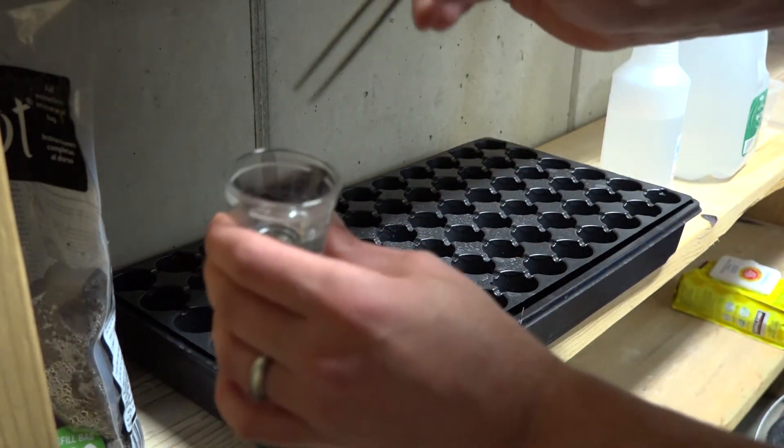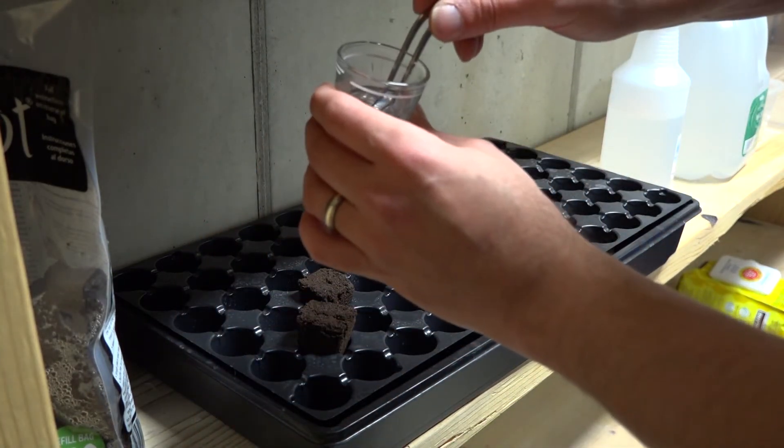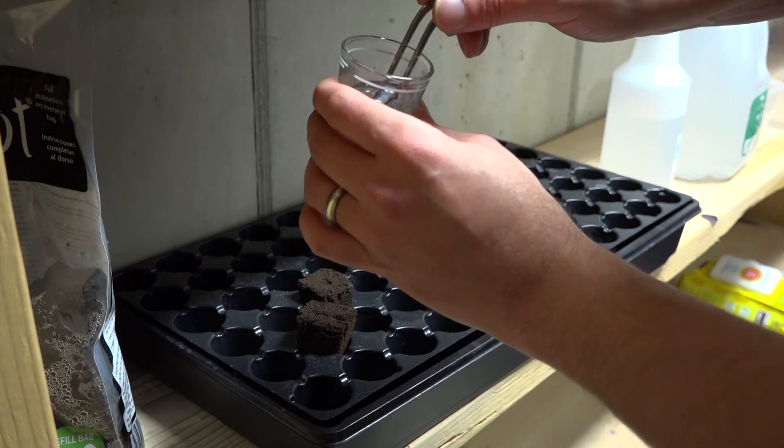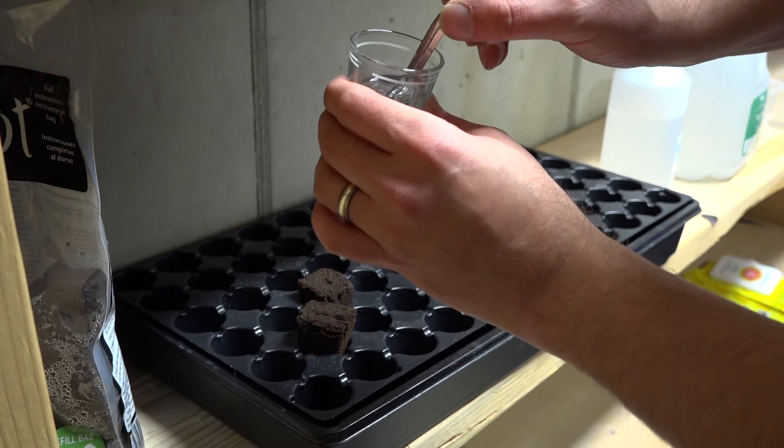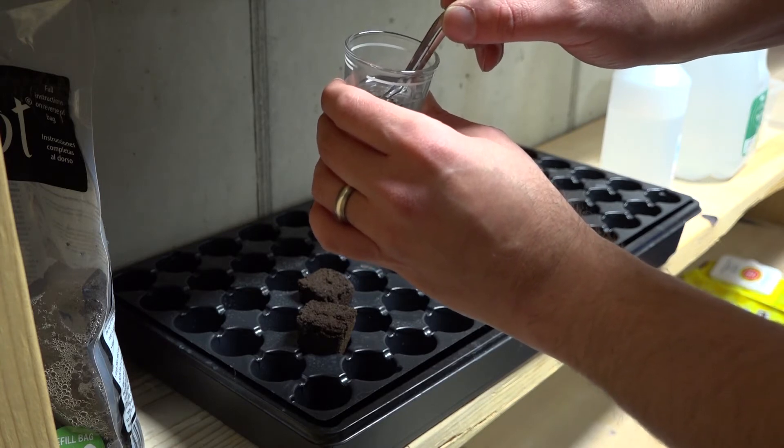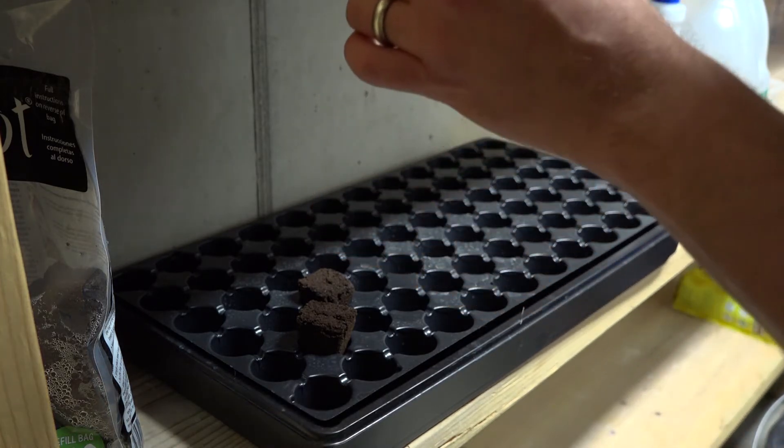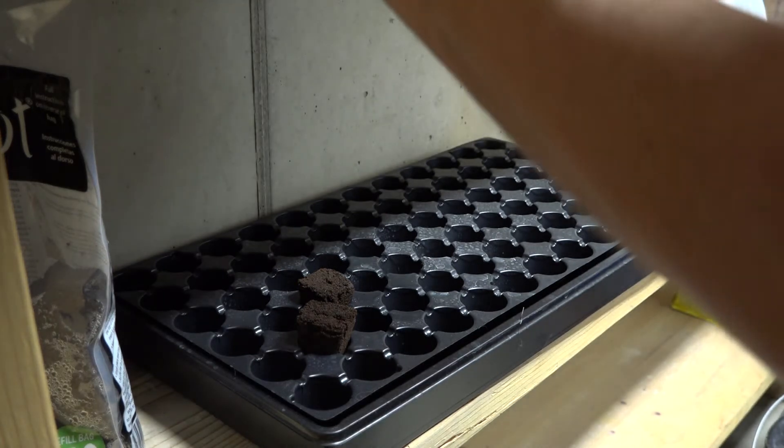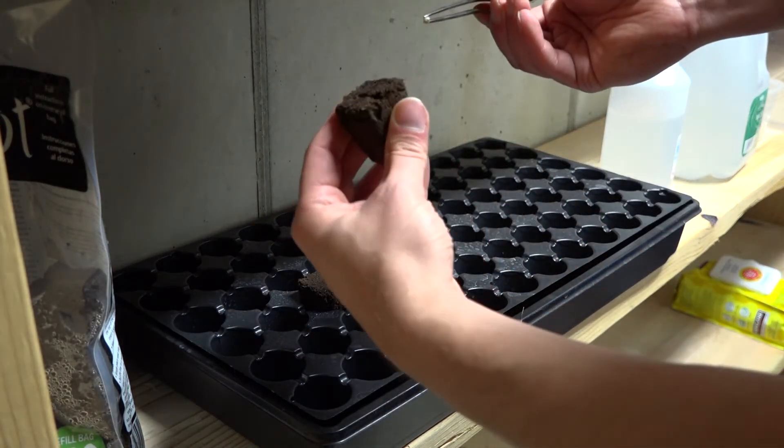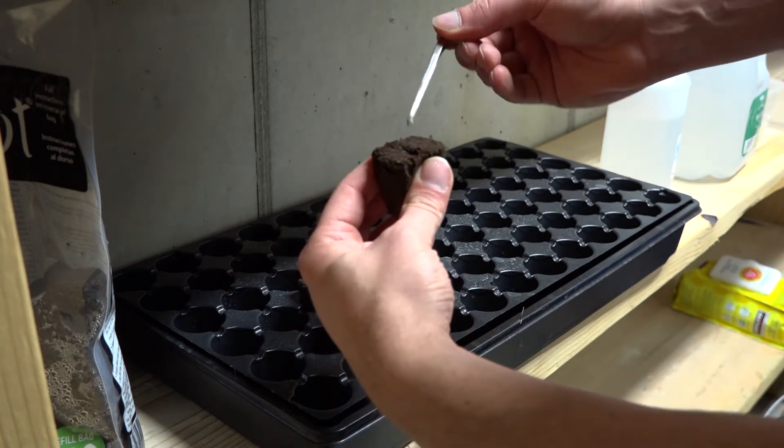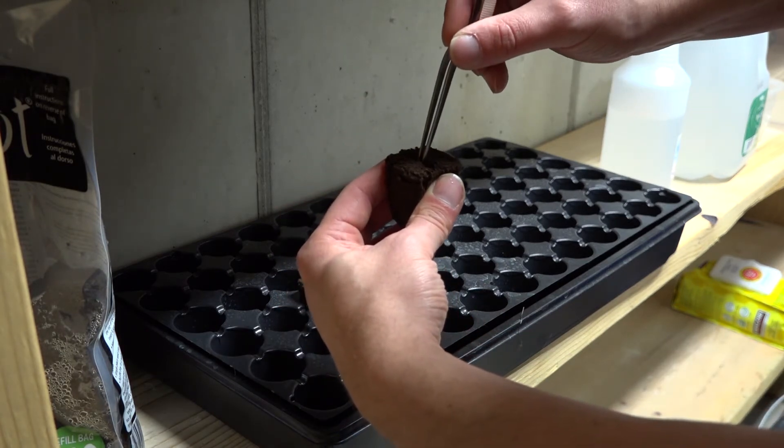Again, tweezers, carefully go down in there. It's a little more complicated. You can squeeze the Root Riot so it opens up the hole a bit more. Plop that seed right in there.